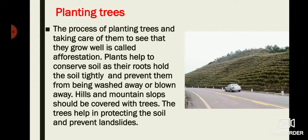The first method is planting trees. The process of planting trees and taking care of them so that they grow well is called afforestation. Plants help to conserve soil as their roots hold the soil tightly and prevent it from being washed away or blown away.